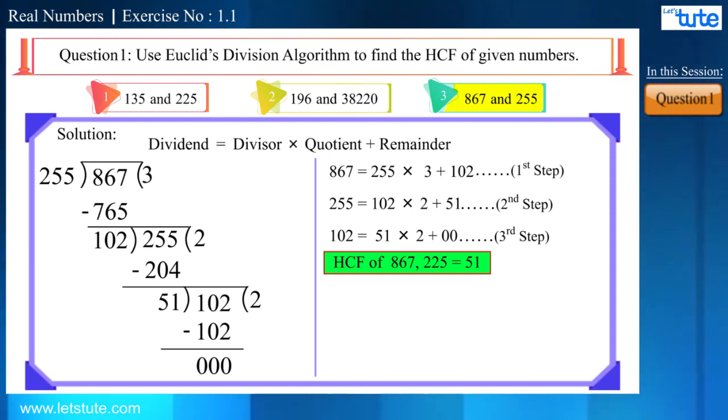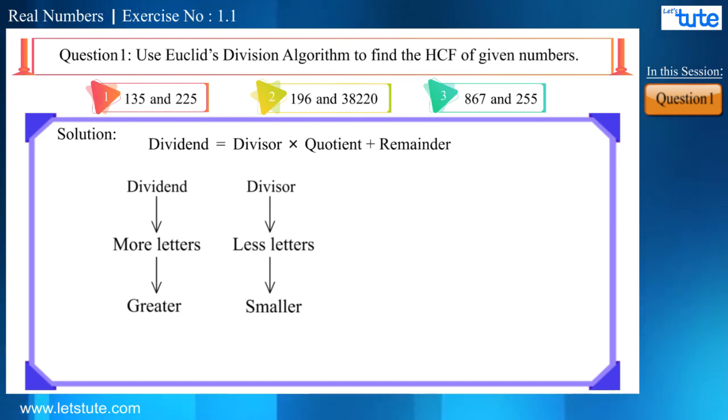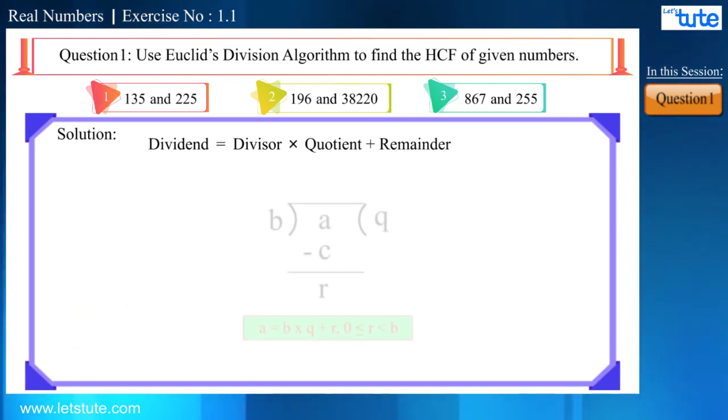Friends, sometimes we get confused while writing the correct terms in the formula. Especially for the terms like dividend and divisor. Let me tell you one very simple trick to remember this. As you can see here, dividend has more letters than divisor. Therefore, the dividend will always be greater than divisor. Friends, please note that it is not a mathematical rule, but it is just a trick to remember the terms properly. We can remember the formula by using these letters as shown here. We will write A equal to B multiplied by Q and plus R from which we will get this formula.